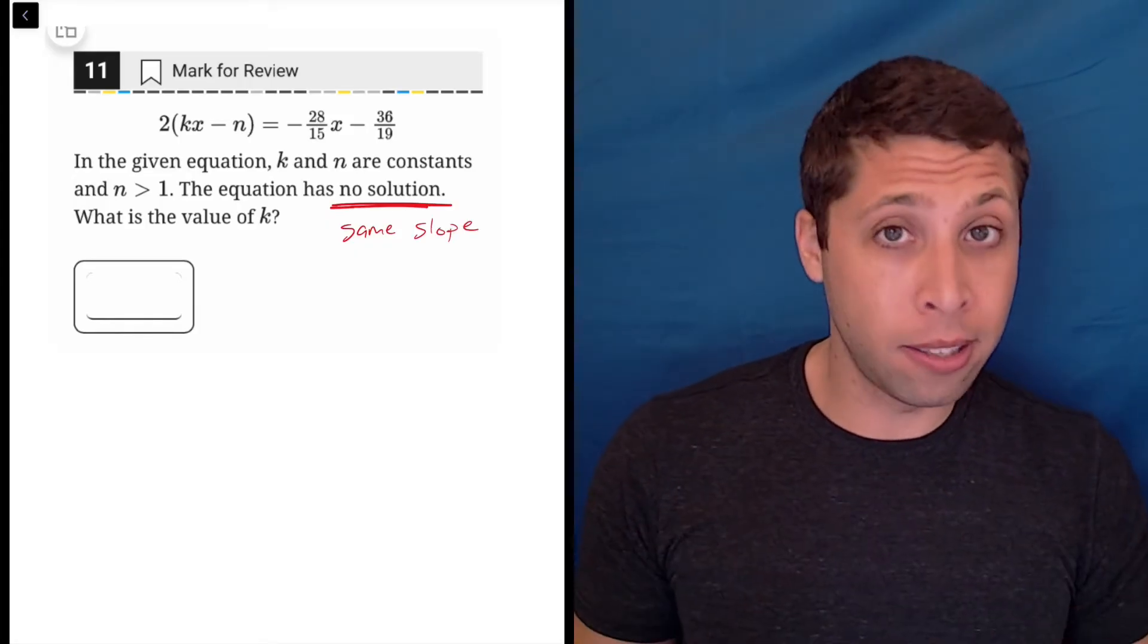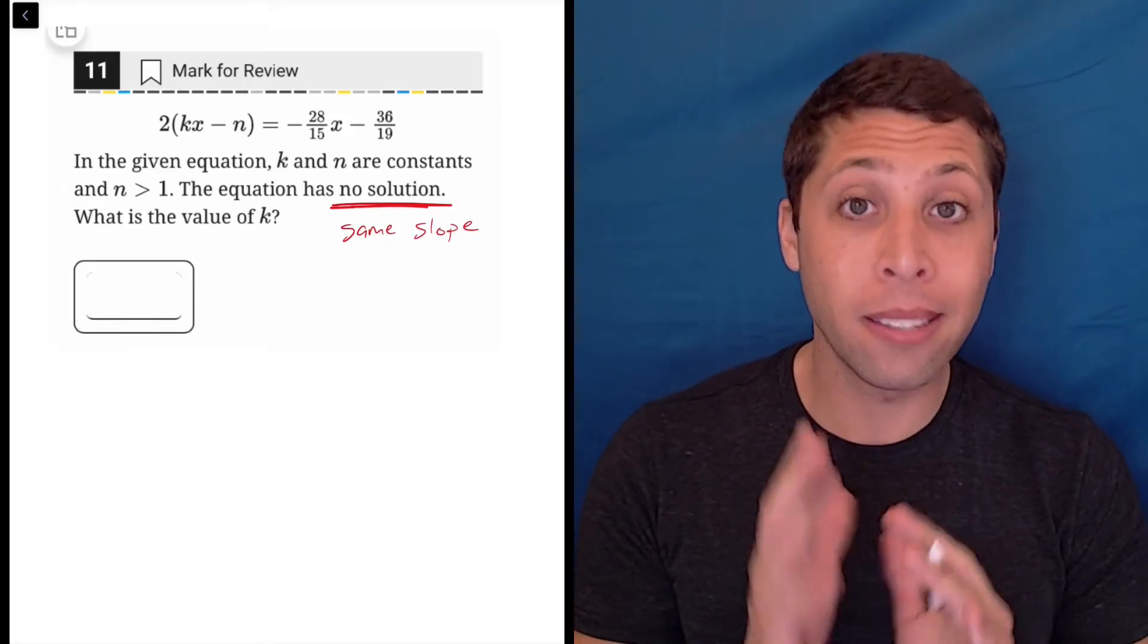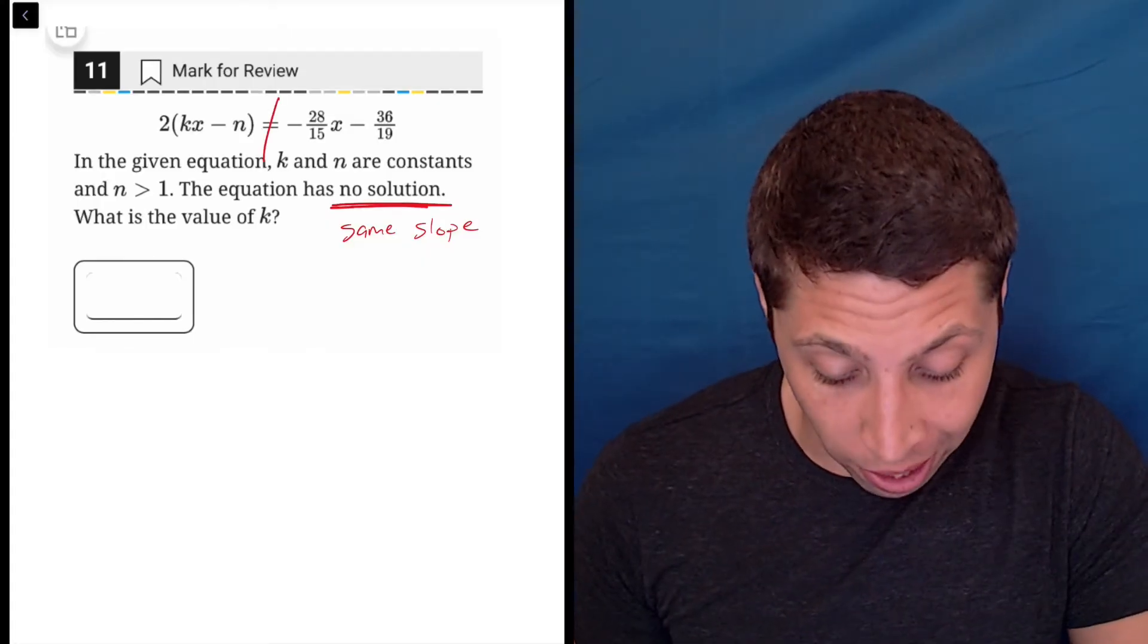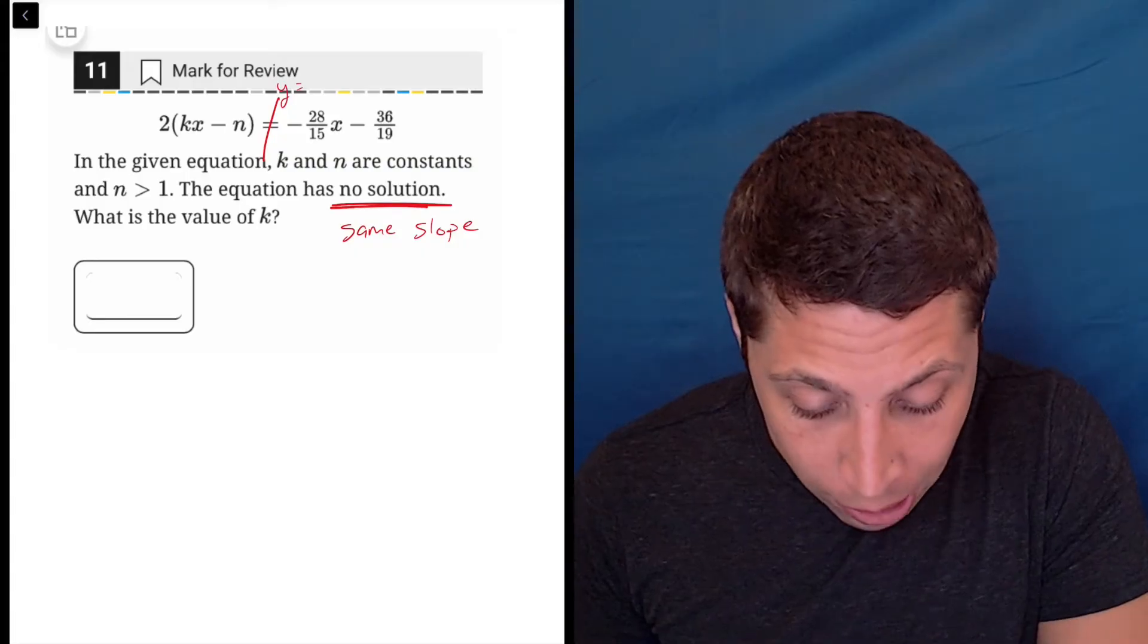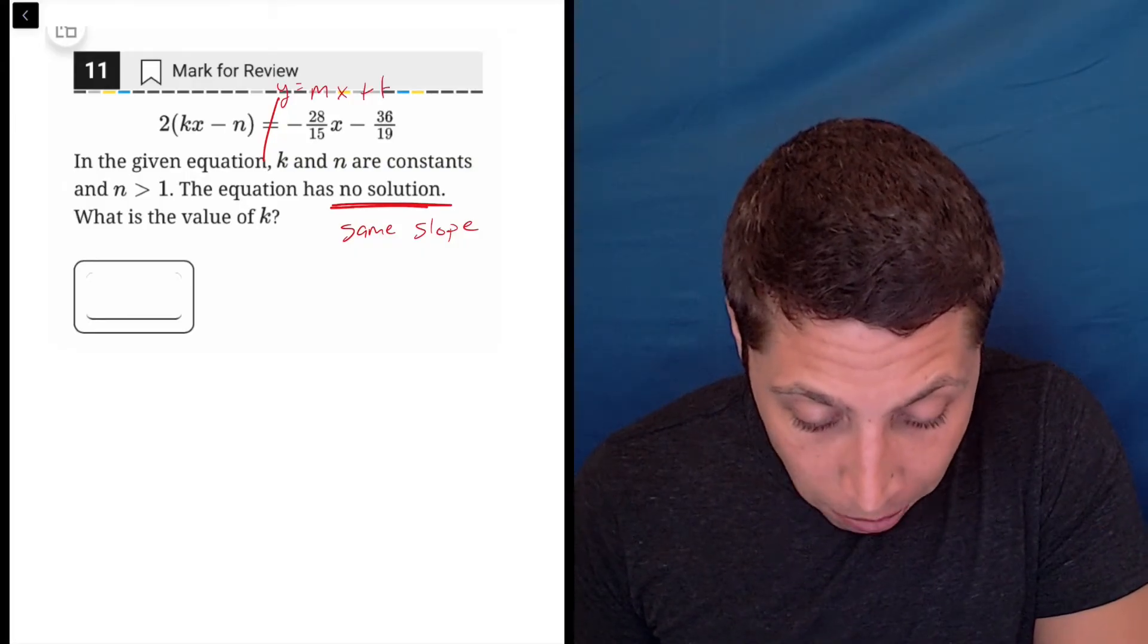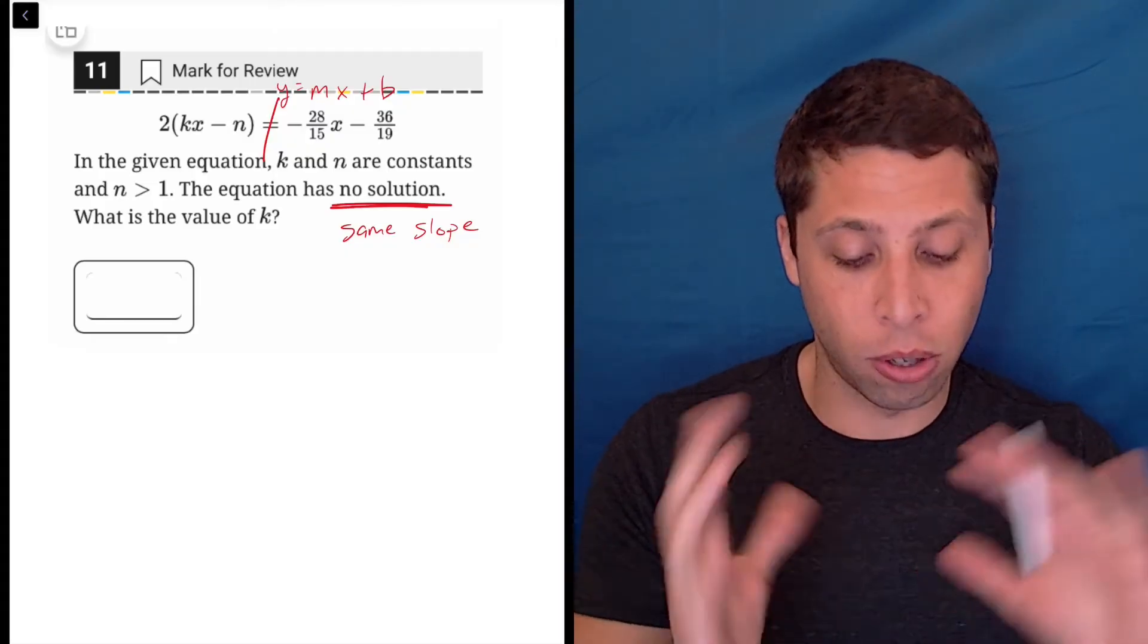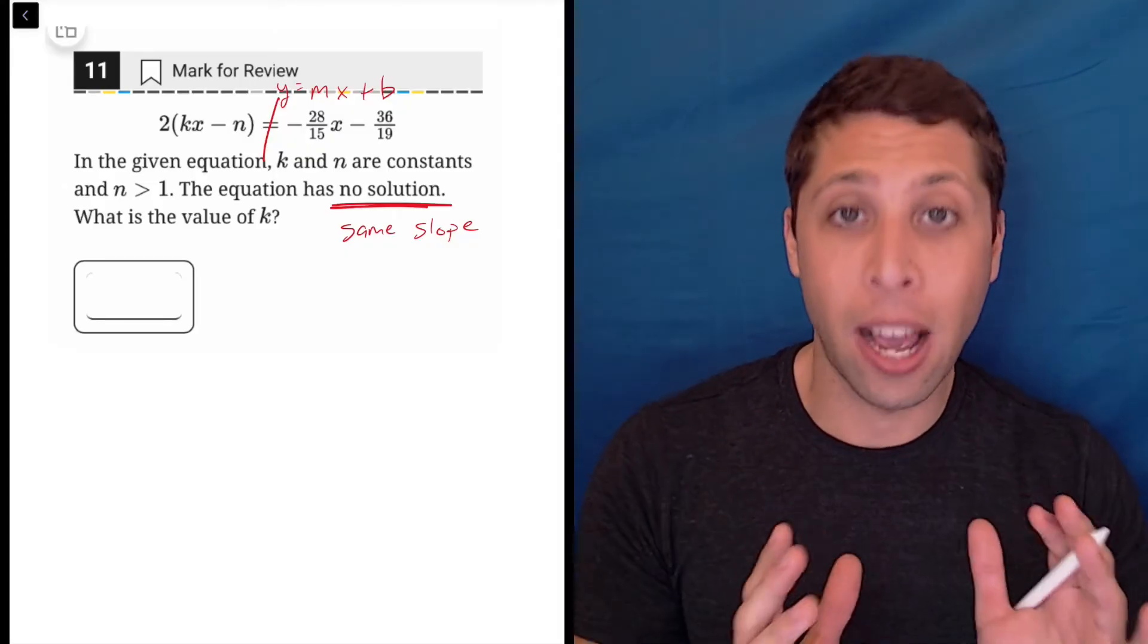Now, if I look at these things, they look kind of crazy, but basically what they're giving me is two linear equations. There's the one on the right, which definitely looks like our y equals mx plus b situation. So there's a slope attached, and there's a b at the end. This is a line.